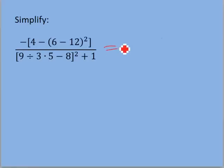For this first one, we've got negative, and then inside of brackets, we have 4 minus, and then inside parentheses, 6 minus 12 squared. So, you want to start by looking at that 6 minus 12, because that's inside the innermost parentheses.